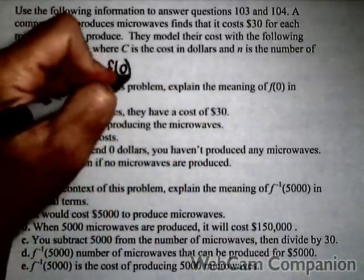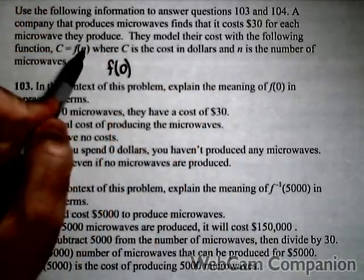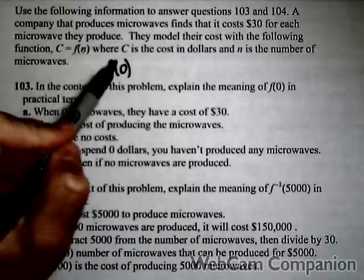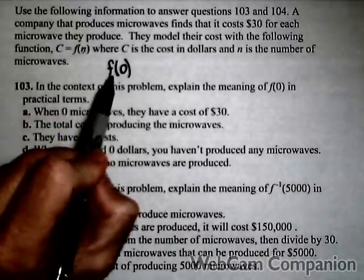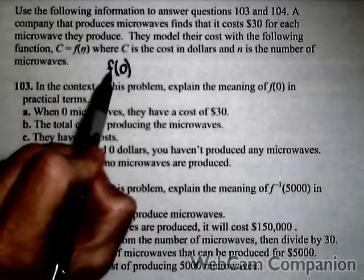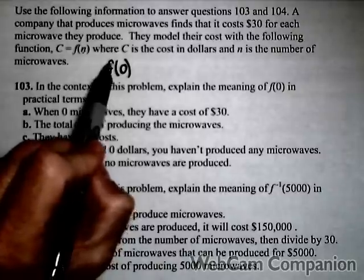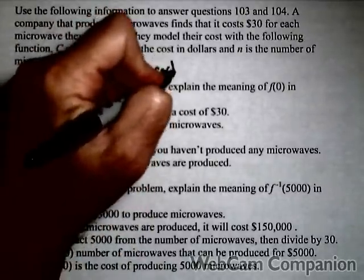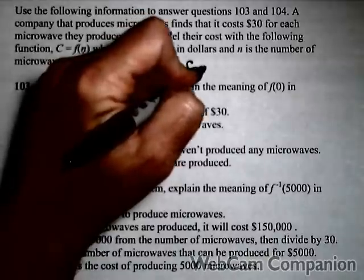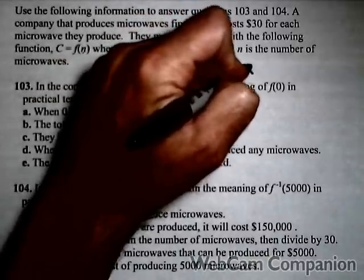The first problem says interpret f(0). That means we're putting 0 in for n, so the number of microwaves is 0. Remember what f does - if you put 0 in, then f computes the cost. So this is going to be the cost for producing 0 microwaves.